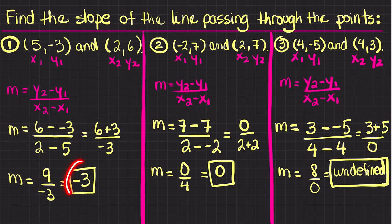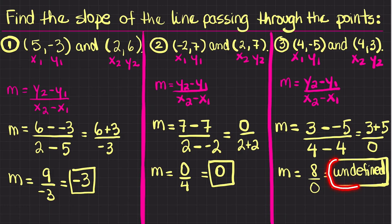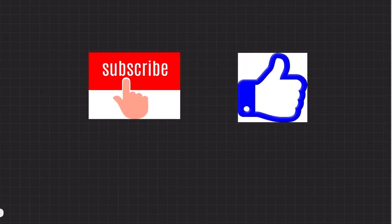So again, you can find a number — a fraction, a whole number, a positive, a negative, or a decimal — for your slope. Or you can get 0 for your slope whenever you have 0 in the numerator. Or you will get that your slope is undefined whenever you have 0 in the denominator, once you plug in all the values in the formula. I hope this video was helpful. If so, please hit the like button, and see you on the next video.